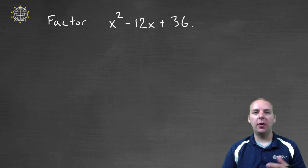Here we're being asked to factor x² - 12x + 36. The first thing I notice is that this is a trinomial, and secondly, this is a quadratic which has an x² term.